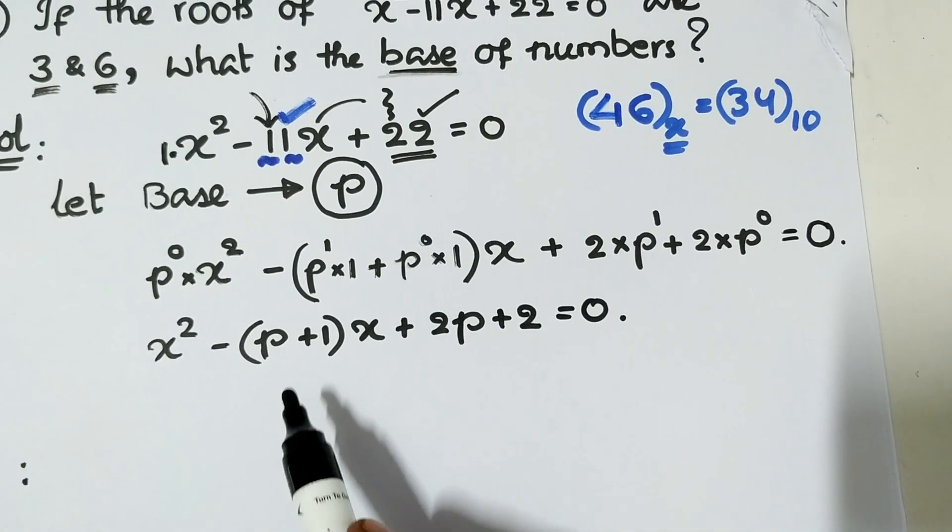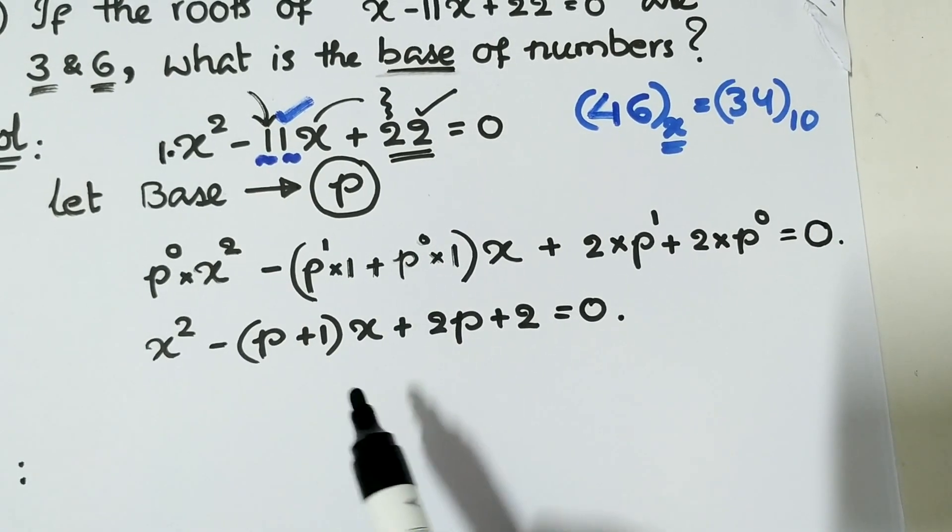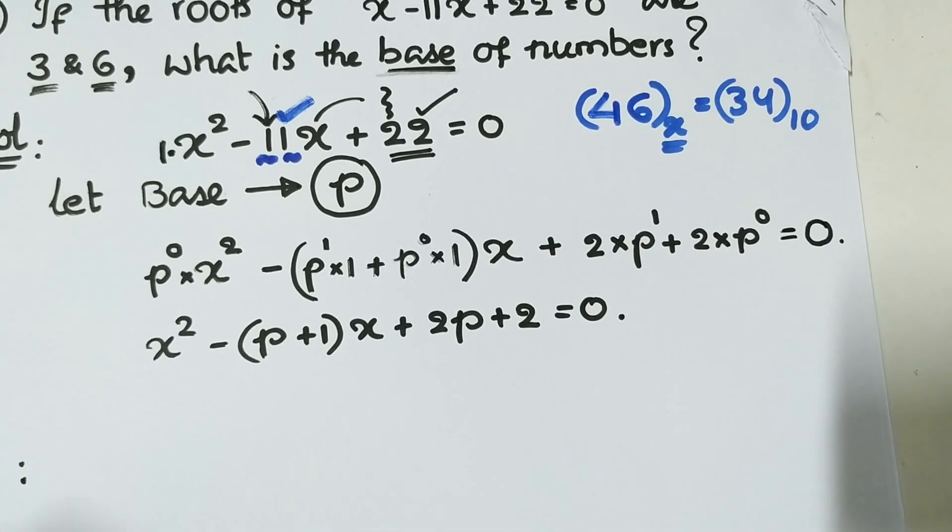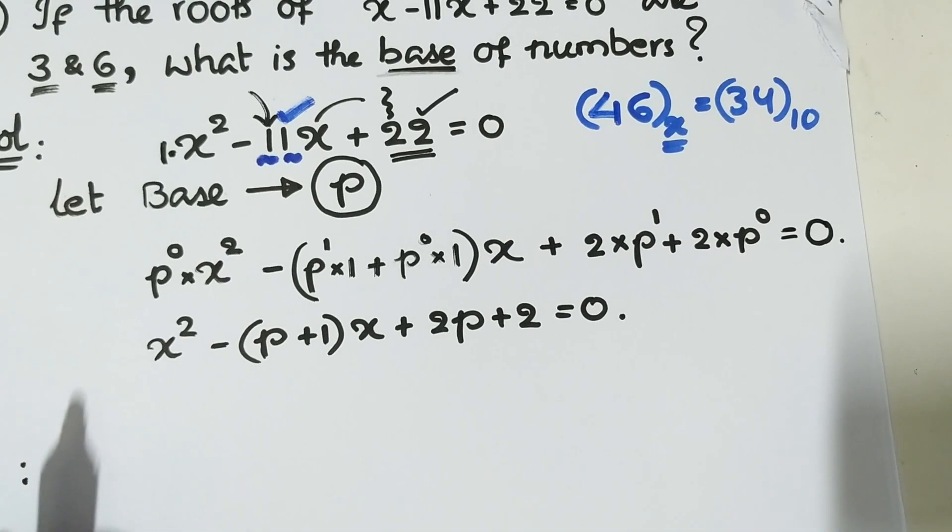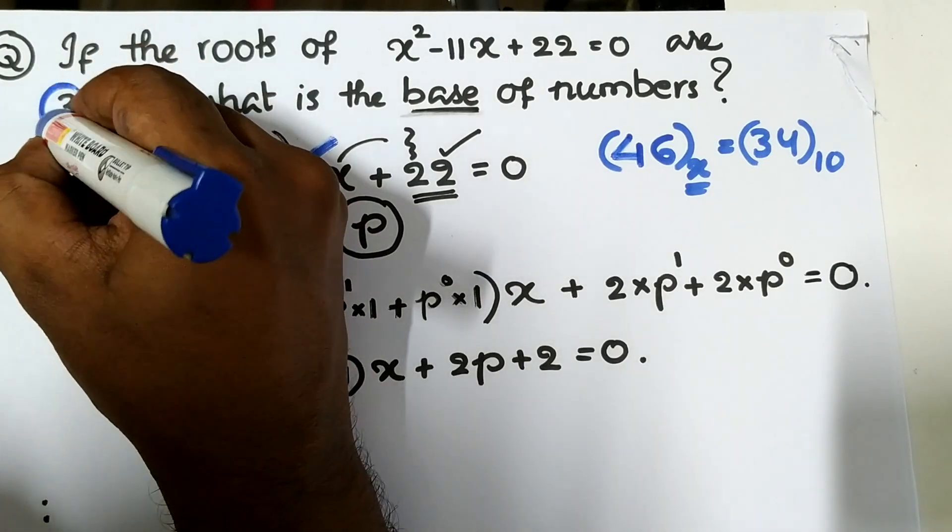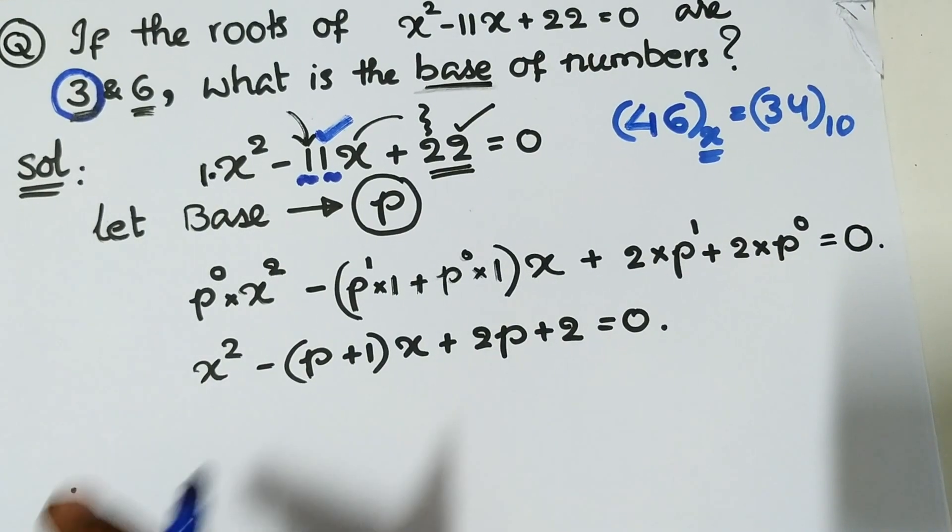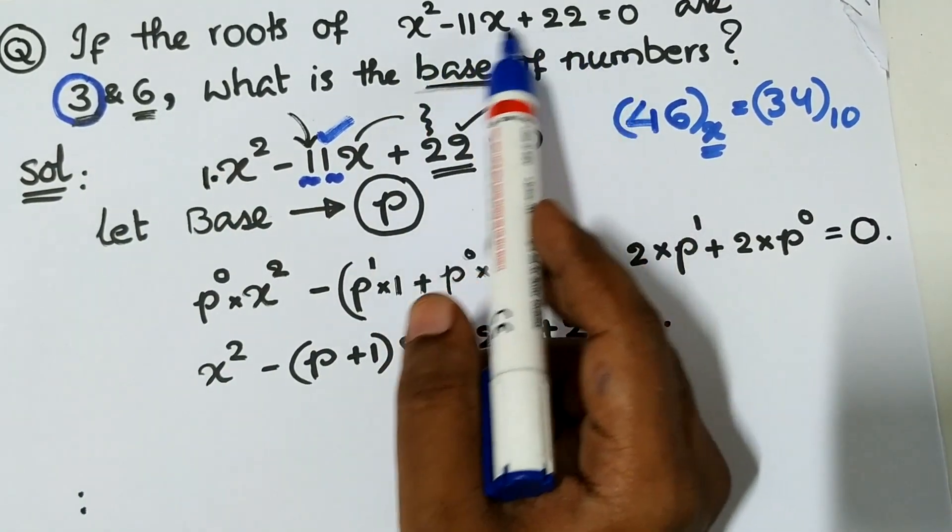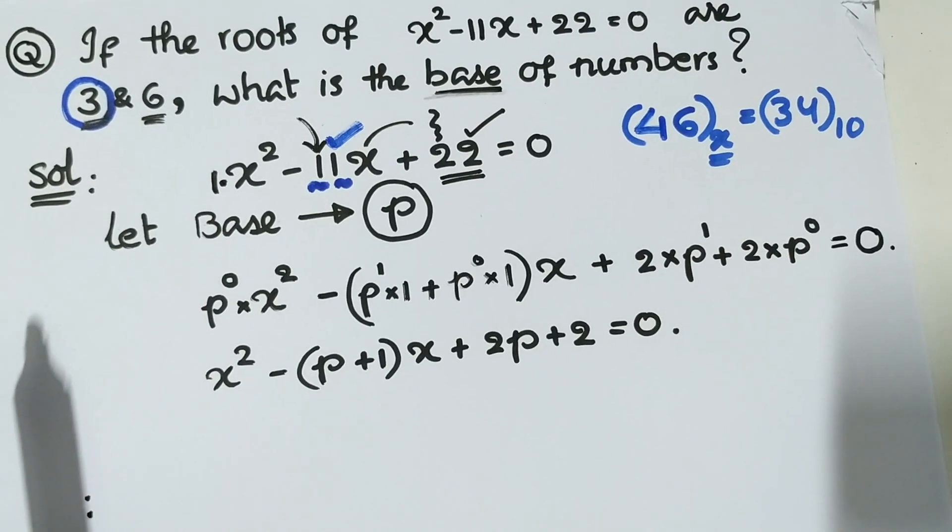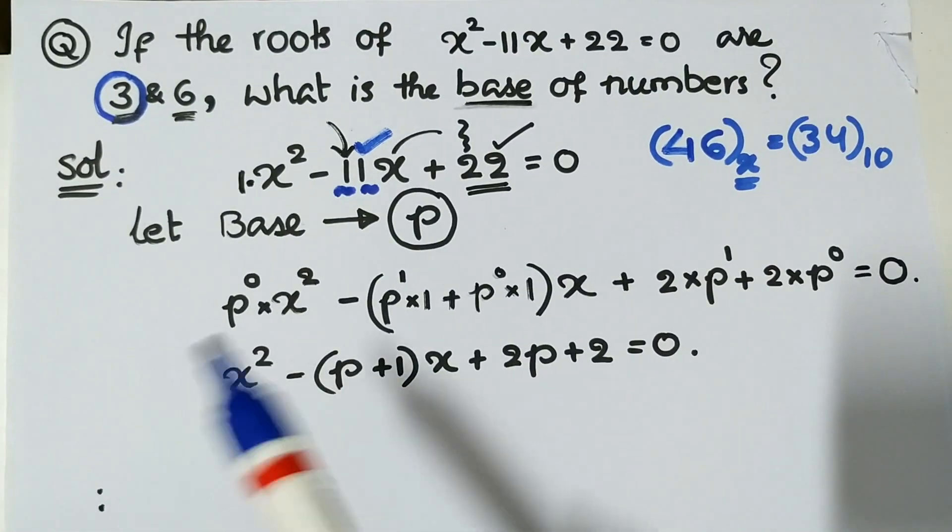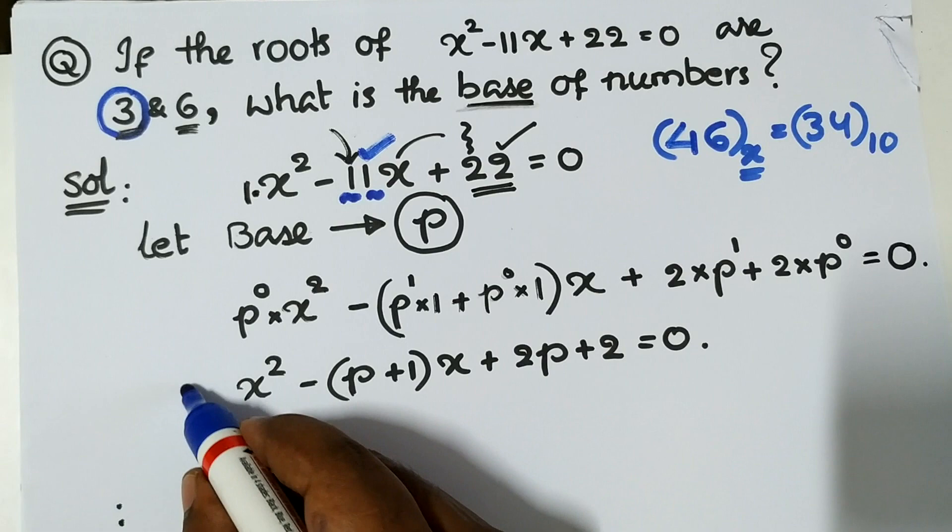Now you have a couple of unknowns - I don't know what is x and P. In every question, the question will always help you. Don't ever worry for questions, you happily invite questions because questions will definitely help you. Let me take one of the possible cases, x equal to 3, because the roots of this quadratic equation are given as 3 and 6.